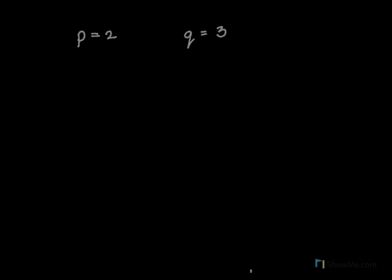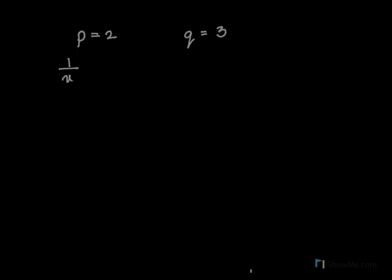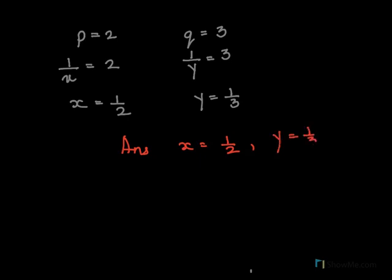So now we have p equal to 2 and q equal to 3. But if we go back, this was an equation. Remember we had to find the value of x and y. We don't have to find the value of p and q. And if you remember, we have substituted here. p is 1/x and we said q was 1/y. So for p, I will now put 1/x, resubstitute, which is equal to 2. So what will x be equal to 1/2? For q, I am going to put 1/y equal to 3. So what is y equal to 1/3? So this is my answer. x equal to 1/2 and y equal to 1/3.